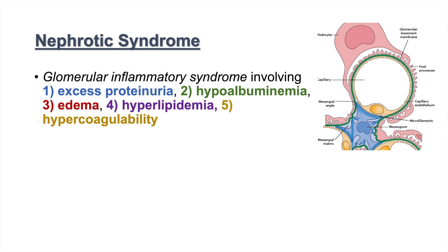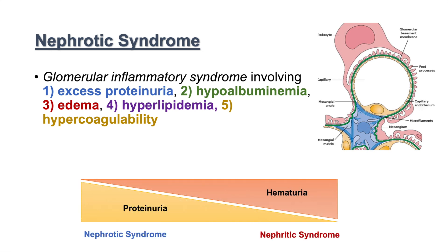Nephrotic syndrome exists on a spectrum. On one end of the spectrum, we have high proteinuria with little hematuria, and that's known as nephrotic syndrome. On the opposite end of the spectrum, we have high levels of hematuria with very little proteinuria, and that is nephritic syndrome. Different diseases exist on different parts of this spectrum, and at some point when we have high levels of protein in our urine — proteinuria — we consider that nephrotic syndrome. I'll tell you what that number is in the next slide.